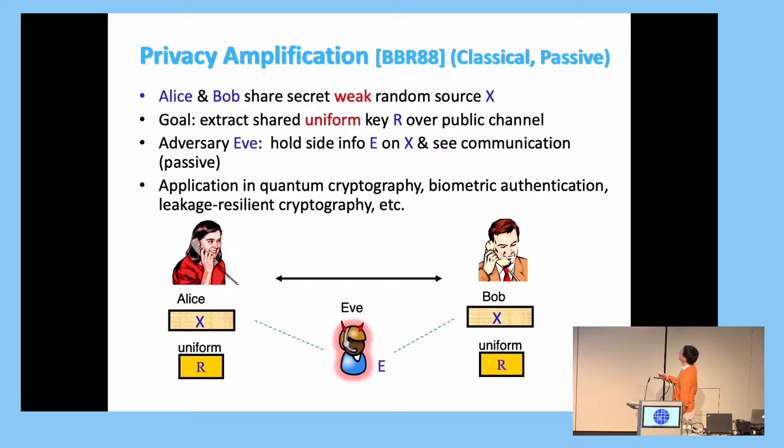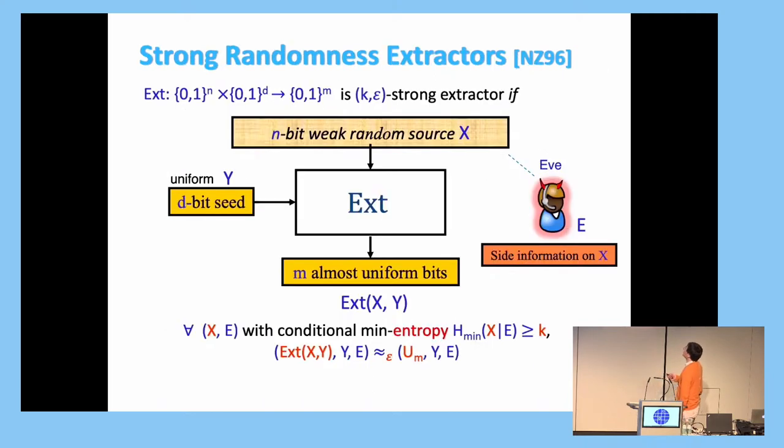And Eve also sees everything between Alice and Bob. So this can be done by a strong randomness extractor. And strong randomness extractor is a deterministic function. So the function takes the random source X and attains the uniform random seed Y, and they want to output some uniform random bits. And the extractor output should be close to uniform conditioned on the random seed and the side information E.